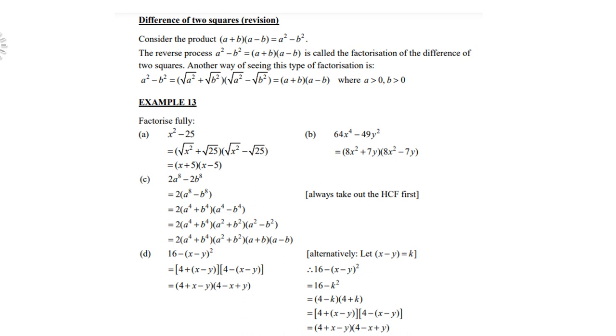Look at C: 2a⁸ - 2b⁸. Well, 2 is not a square, so therefore it's not yet difference of squares. However, I can do a common factor of 2. Then inside the bracket, a⁸ is a square because it is a⁴ times a⁴. b⁸ is a square because it is b⁴ times b⁴.